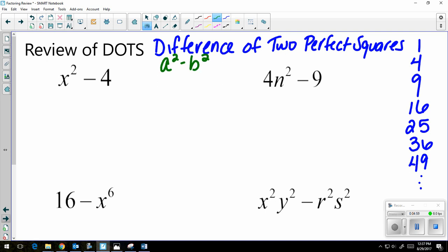So if I have a squared minus b squared, general form, it's going to be a minus b and a plus b. That's like our rule for difference of perfect squares.